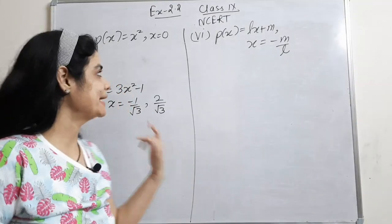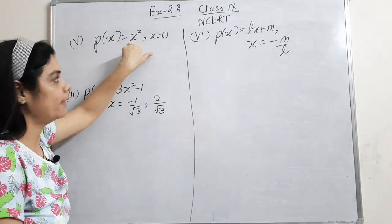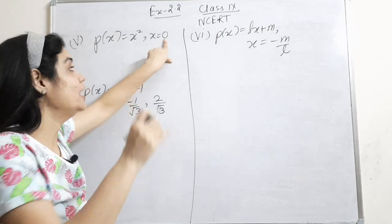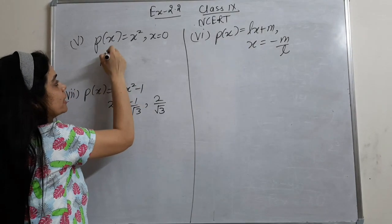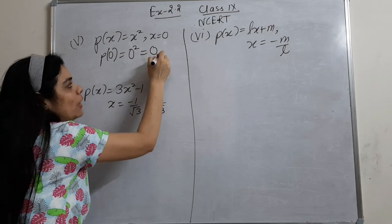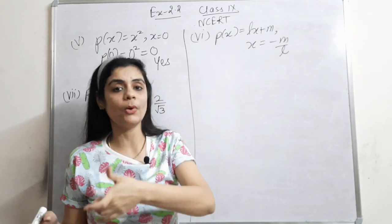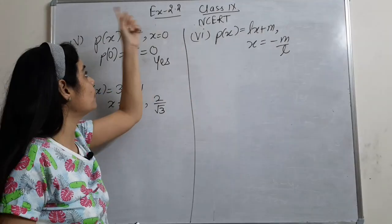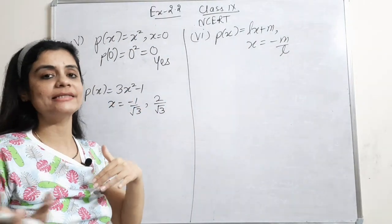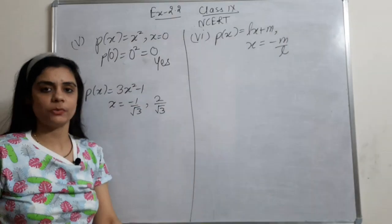Fifth part is very easy. The polynomial is x² and I have to check x = 0. Put 0 in place of x: 0² = 0. So the answer is 0 — yes! x = 0 is the zero of p(x) = x². I can also say x = 0 is the root of p(x) = x².